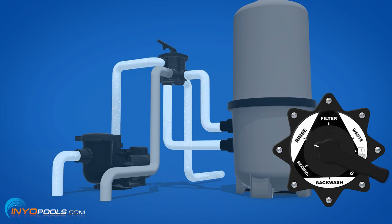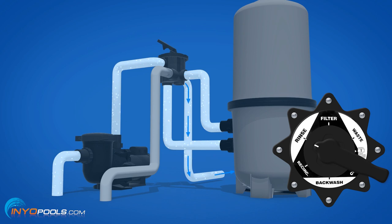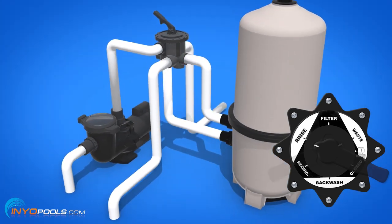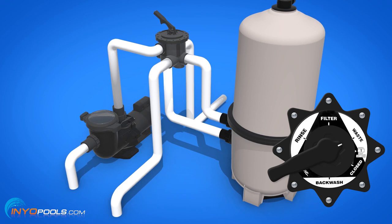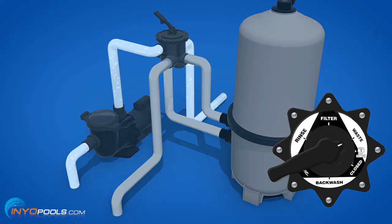The rinse setting is used to clear the valve and pipes of any residual dirt after backwashing — water flows in the normal direction through the filter but discharges out the backwash port. The waste setting is used to discharge dirty water from the pool without going through the filter; water flows from the main intake directly to the backwash port.